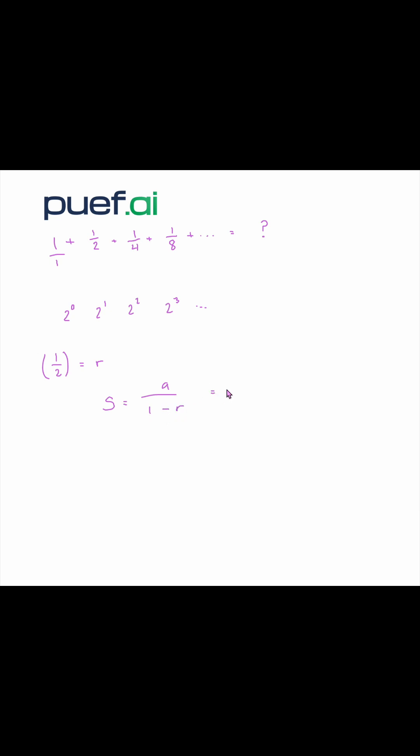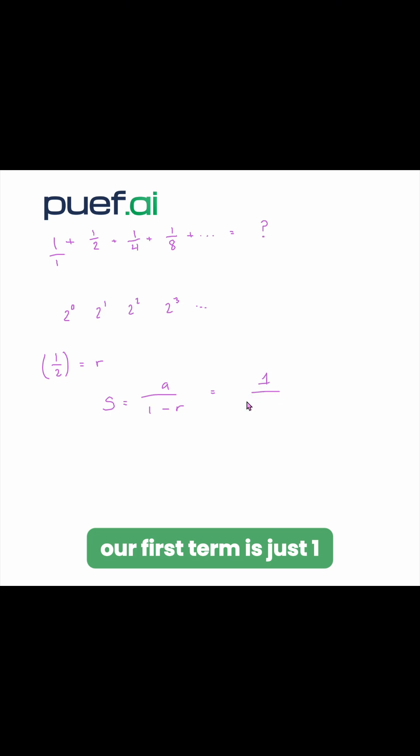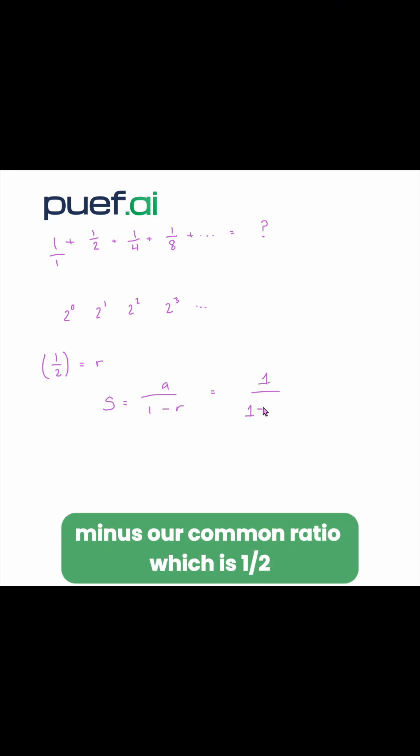So now let's plug in everything that we know. Our first term is just 1, and we're going to divide that by 1 minus our common ratio, which is 1 half, and then let's go ahead and simplify that.